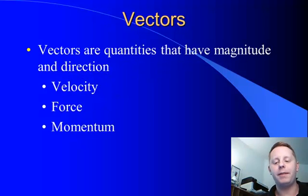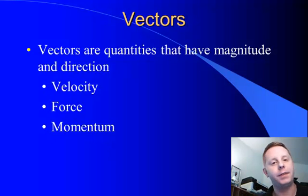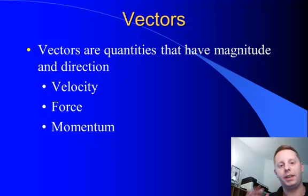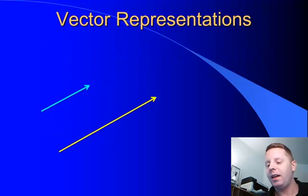Compared to those, we also have vectors. These are quantities that have a magnitude and a direction. Things like velocity, I'm going 35 meters per second due south. Things like force, I'm pushing on something with a force of 50 Newtons. And I'm pushing in a specific direction. Or momentum, that truck coming at me, barreling at me down the highway, has a tremendous momentum and the direction of that momentum is right toward me.